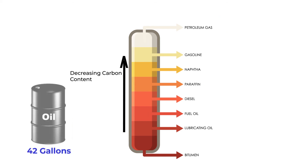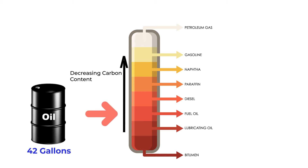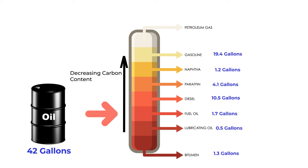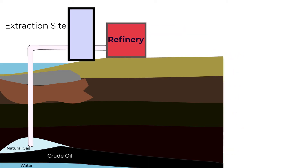A barrel which contains 42 gallons of crude oil, after refinement, produces 19.4 gallons of gasoline, 10.5 gallons of diesel, 4.1 gallons of paraffin, and other fuels in small amounts.